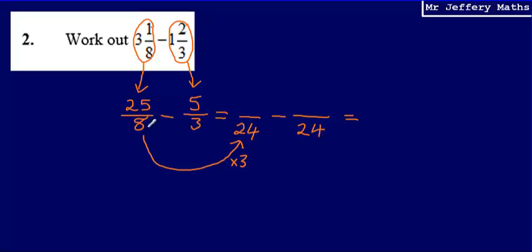Then whatever I have done to the denominator, I'm also going to apply that to the numerator as well. So I've multiplied the denominator by 3, I'm now going to multiply the numerator by 3 as well, and that's going to give me 75 over 24.